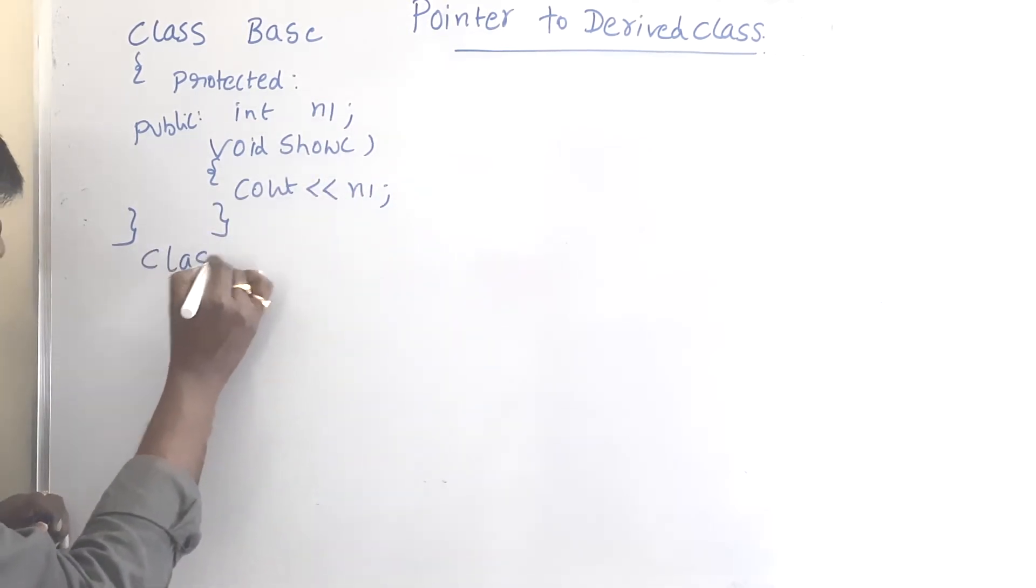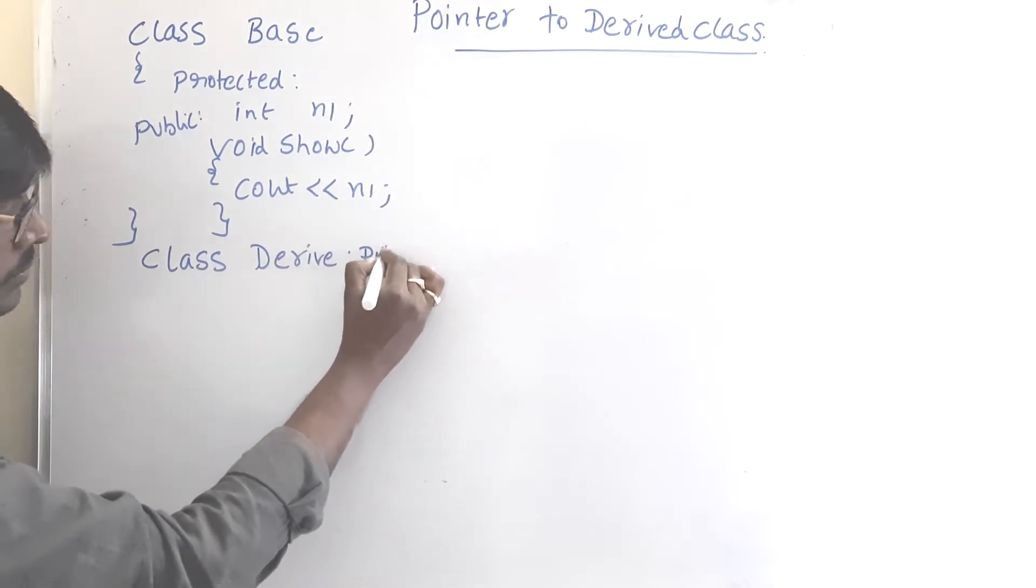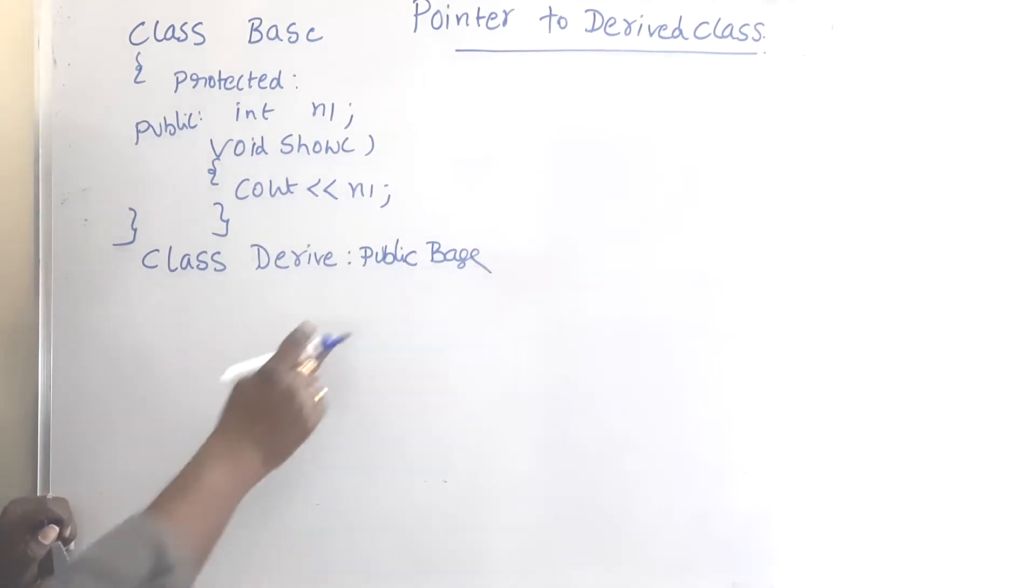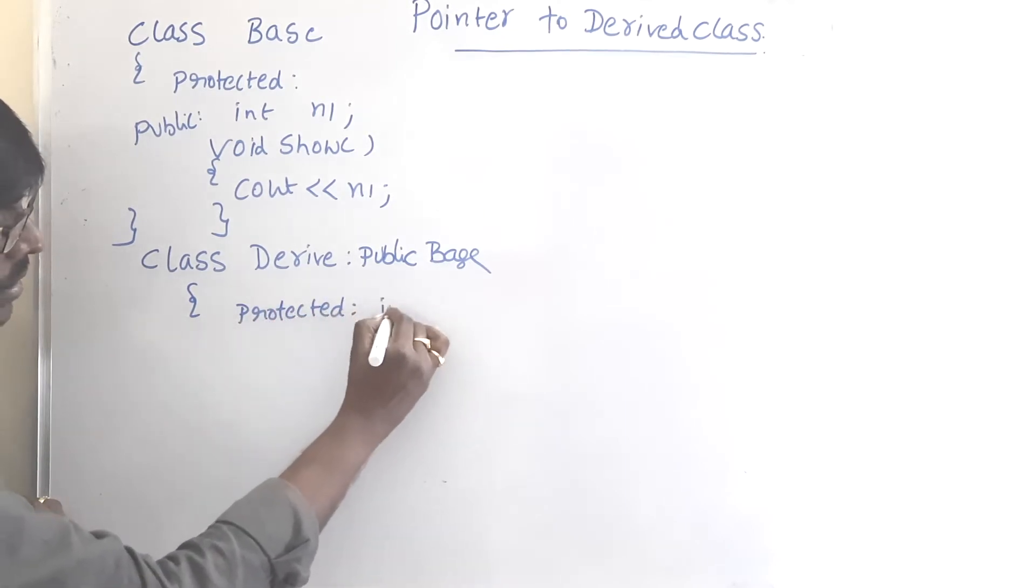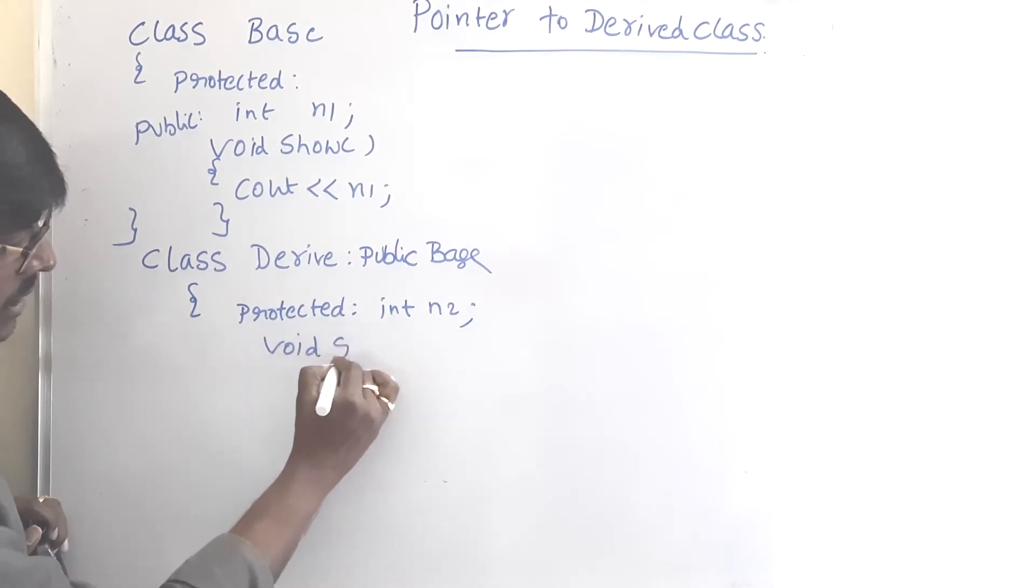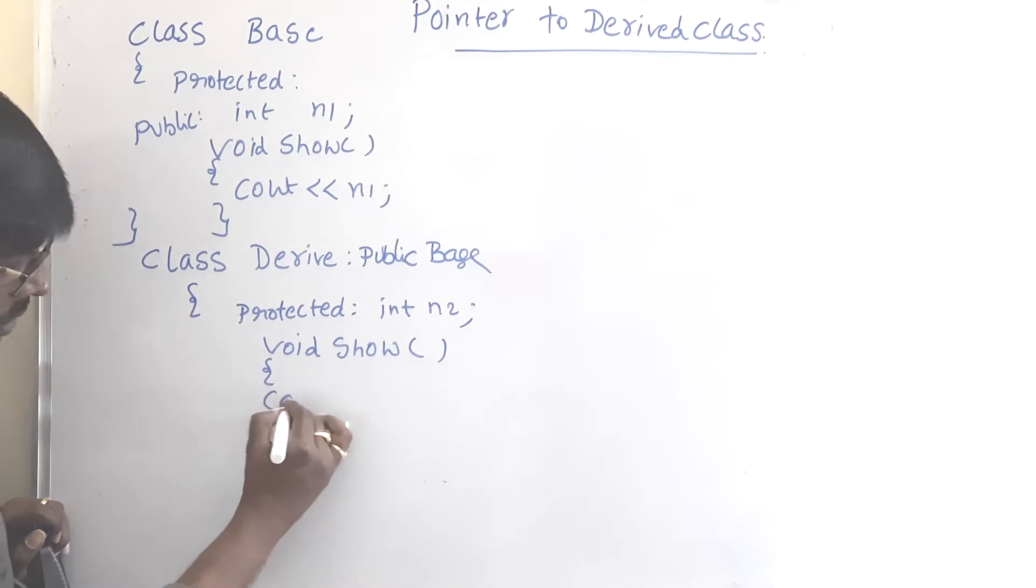Now use one more class: class derive colon public base. So derive is the derived class. In this I am declaring one more variable, protected int n2. Here also I am using the same method, void show, cout.